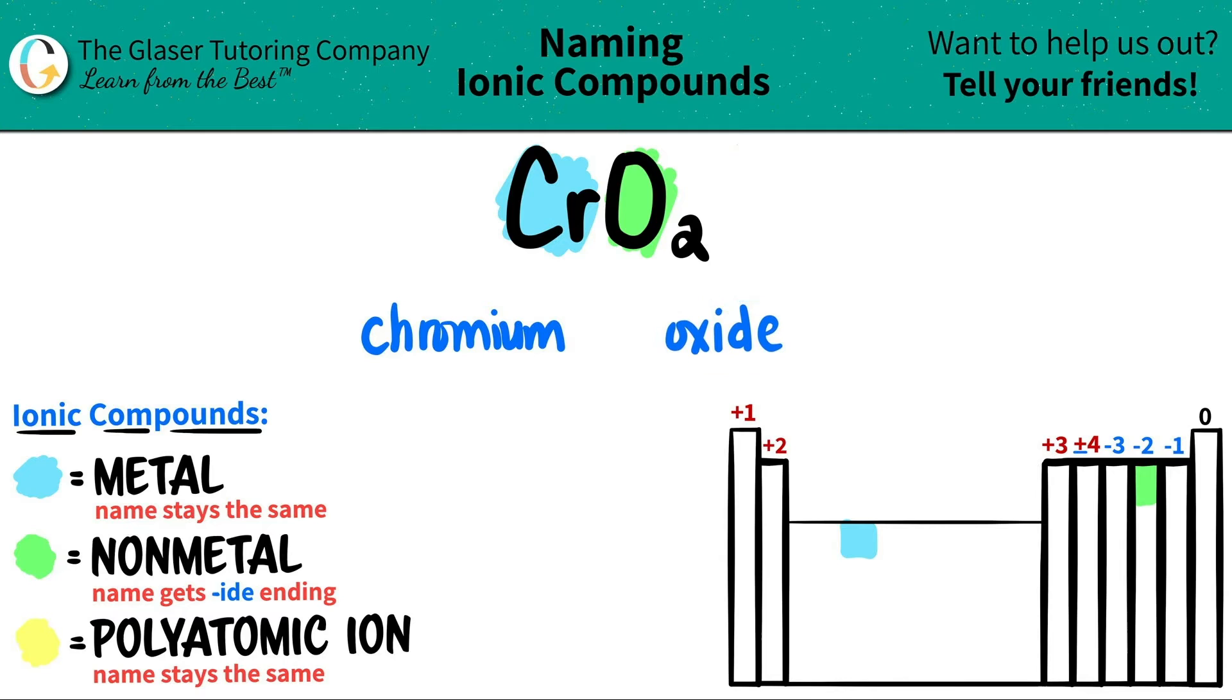Now, since it is an ionic compound, we just have to make sure, do we use a Roman numeral or not? But we do here because chromium is in the transition metals. So I do need a Roman numeral. You need Roman numerals for transition metals. And the Roman numeral is always the charge of the metal. But how are we going to find that out? It's pretty simple.